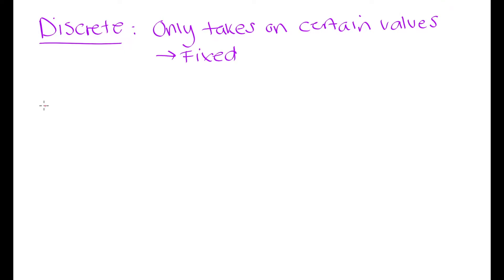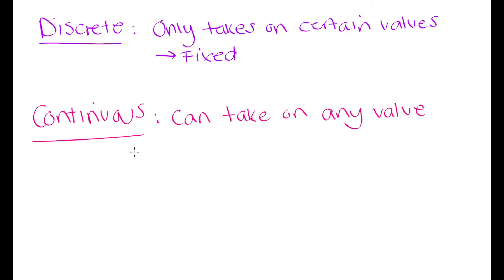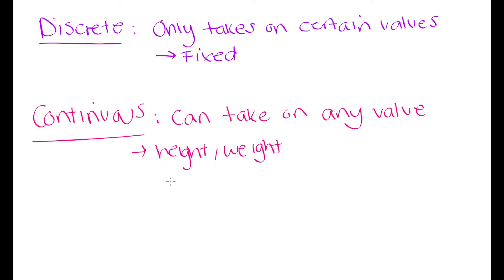Then we have continuous data. Continuous data is data that can take on any value, so the possibilities for that data set are on a continuum. For example, height and weight are examples of continuous data because a person's height is not just 160, 161, 162 and so on — it can be anything in between, like 161.1 centimeters or 161.115 centimeters. The values these can take on are essentially endless.